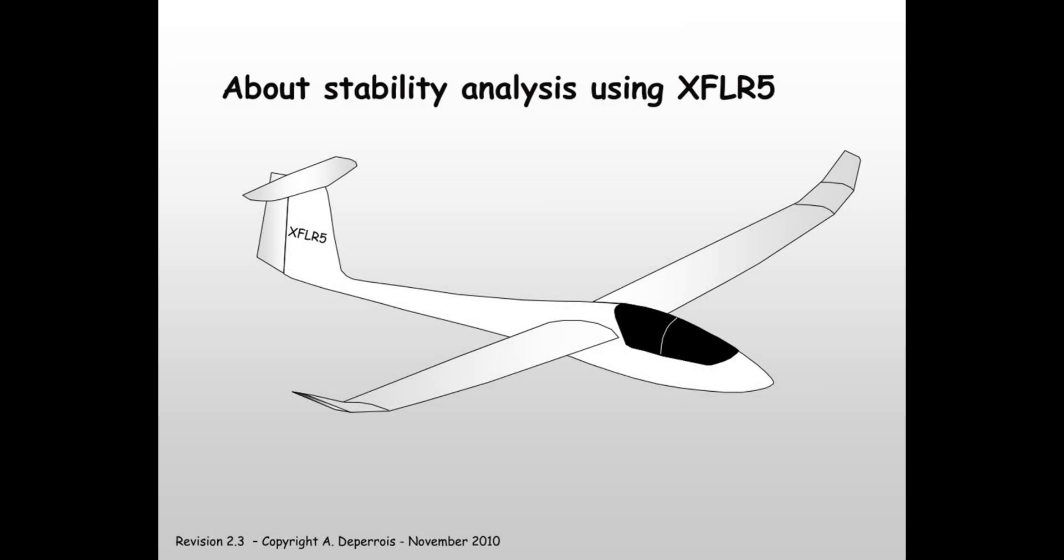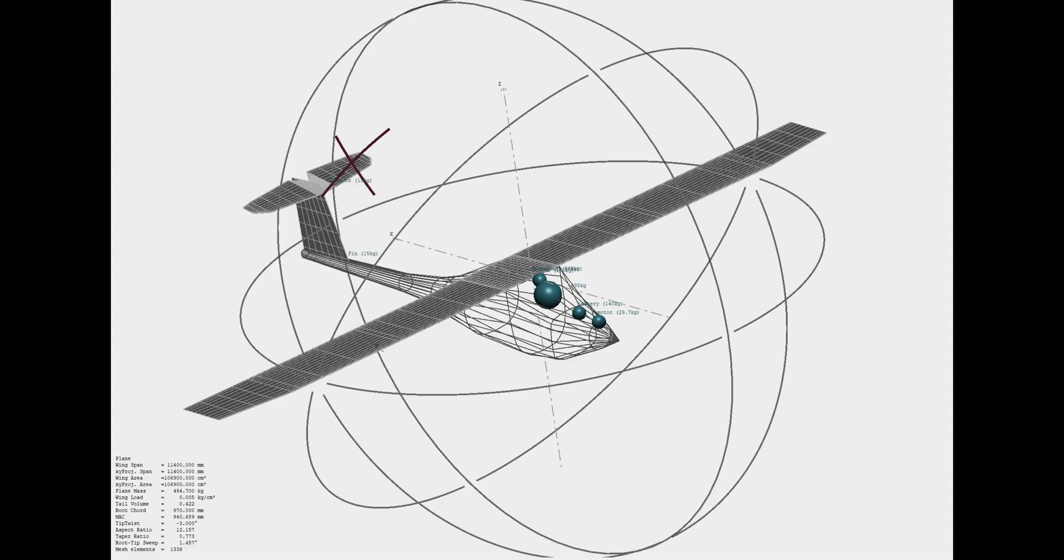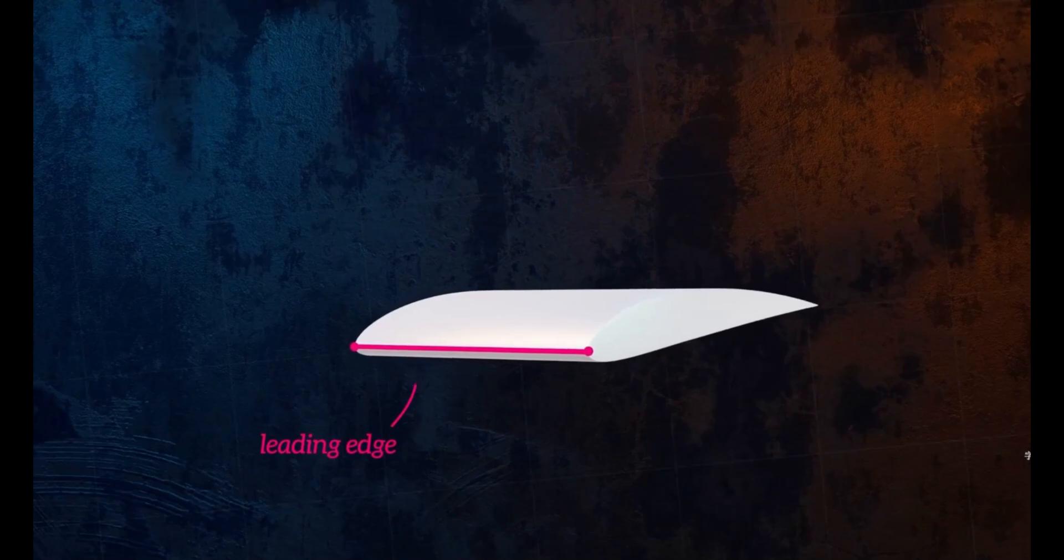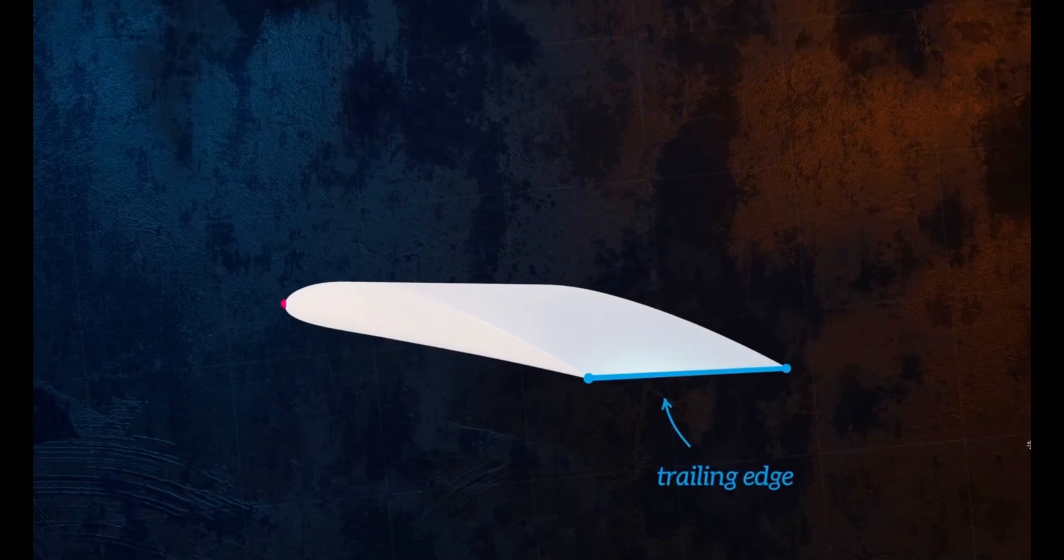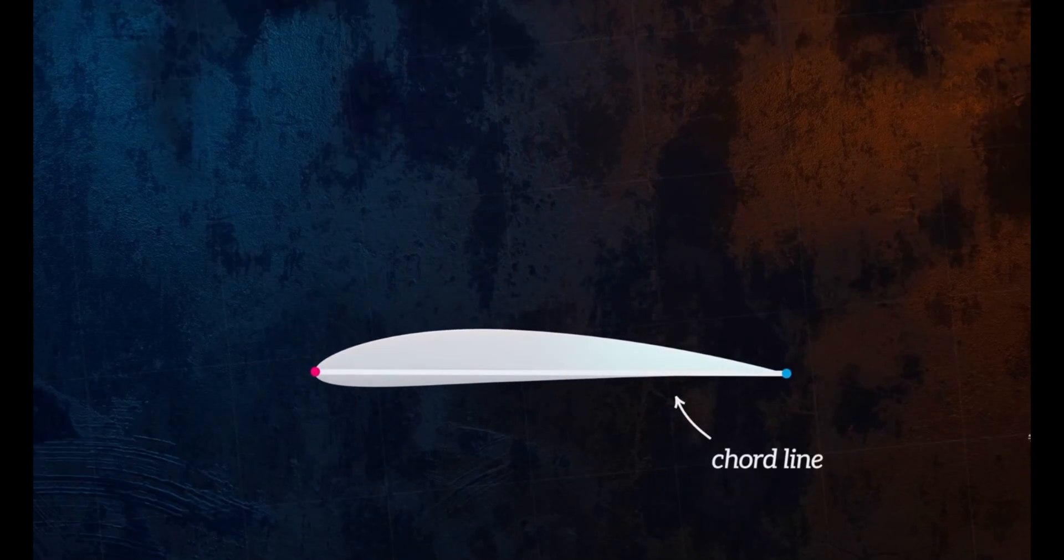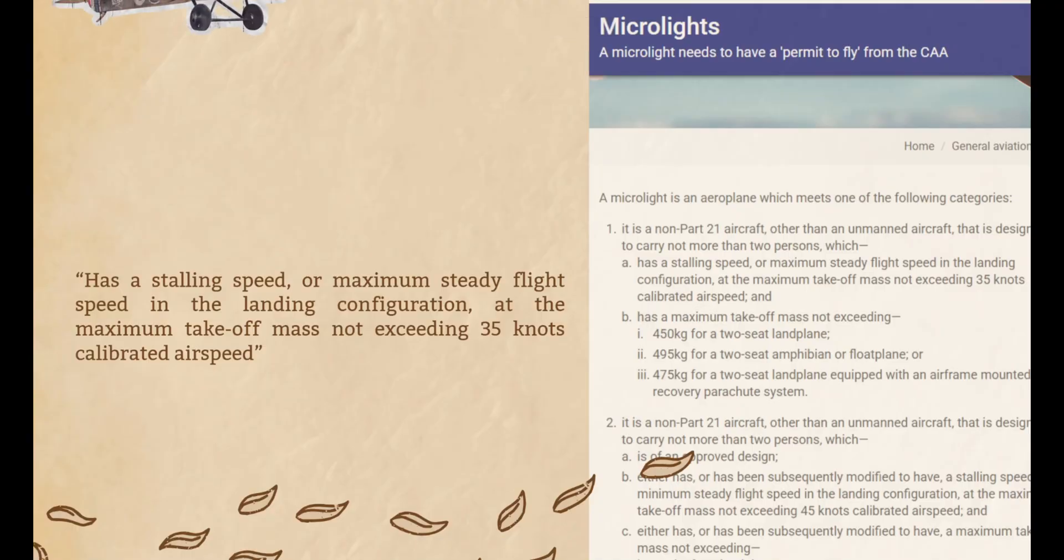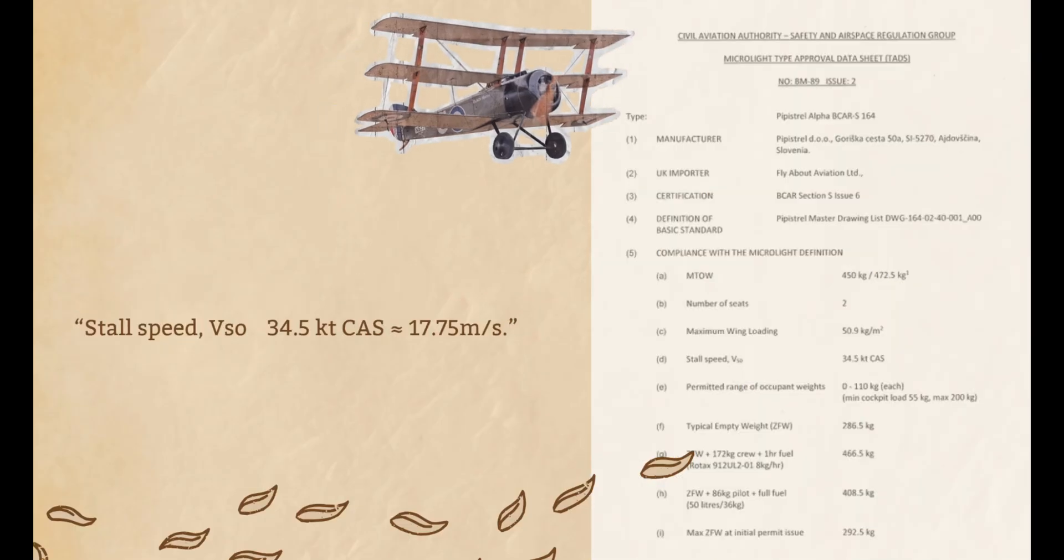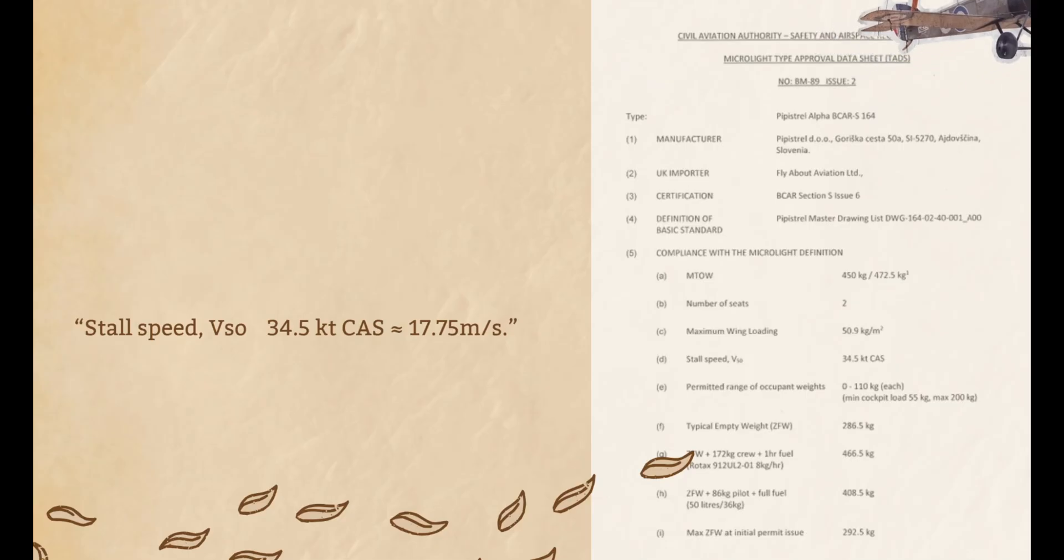I'm still using XFLR5 for the analysis and I'm basically neglecting the influence of the fuselage. The wing area is most closely related to lift and lift is directly linked to stall. A microlight needs to have a permit to fly from the CAA and under UK regulations, its stall speed in the landing configuration is defined as about 35 knots or 18 meters per second. According to the UK CAA Alpha TADS, the Pipistrel has a VSO of 17.7 meters per second.